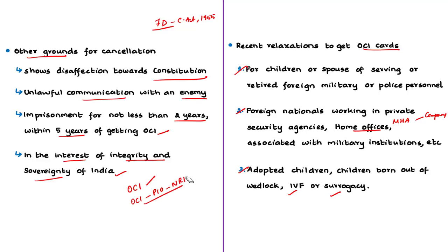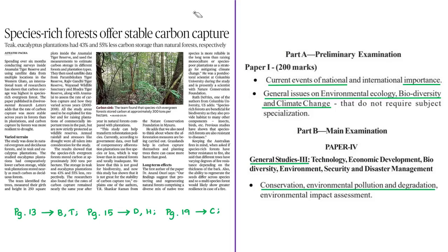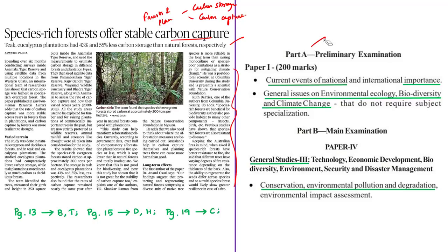To summarize, we have discussed in detail about overseas citizenship of India (OCI) cardholders and compared them with persons of Indian origin and non-resident Indians. The next news article is based on a research study conducted by an international team of researchers on the different rates of carbon capture in different types of forests and plantations, and the different levels of carbon storage. The syllabus relevant for this news article is highlighted for reference.